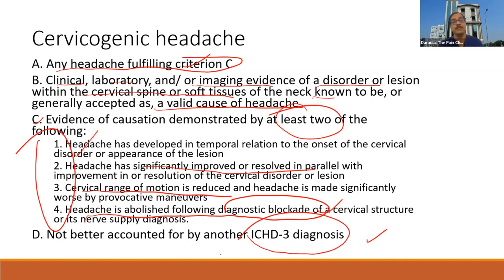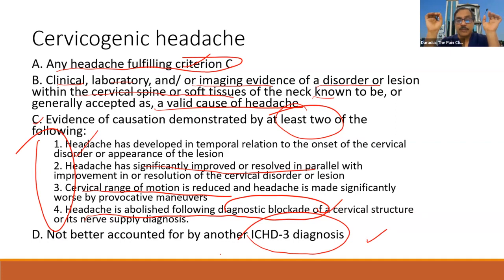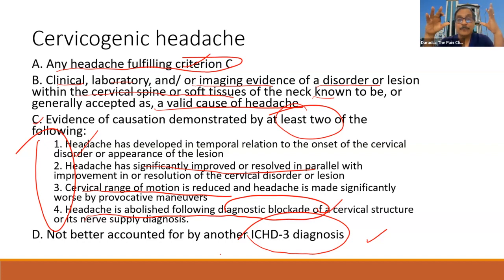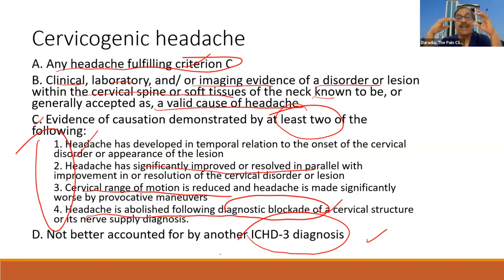Let me repeat the four criteria quickly. One: onset of headache matches onset of neck pathology. Two: diminution of pain matches diminution of neck pathology. Three: range of movement reduced by at least 10 degrees. Four: diagnostic block performed and headache resolved. Out of these four, two must be present to make a diagnosis of cervicogenic headache, and there must be no other explanation.